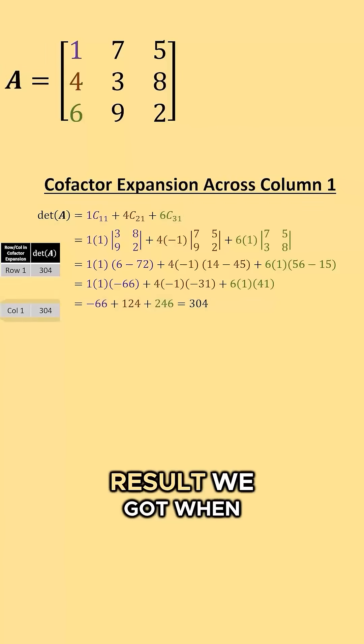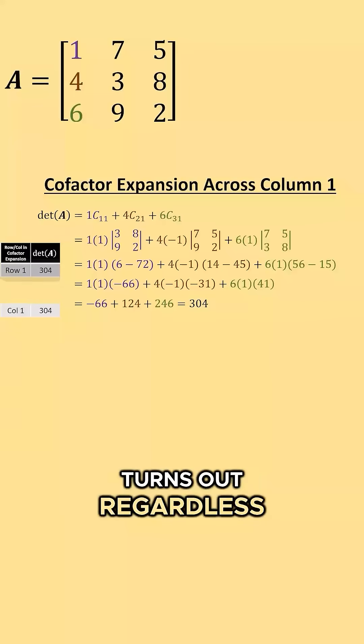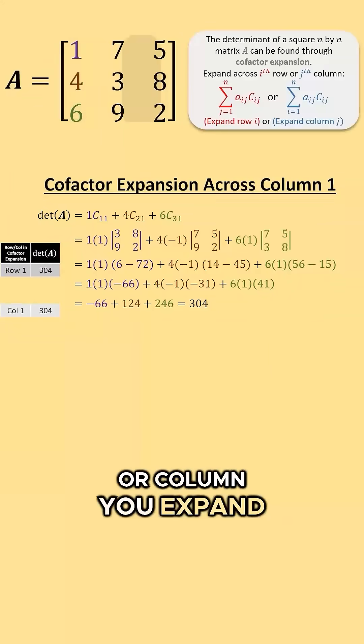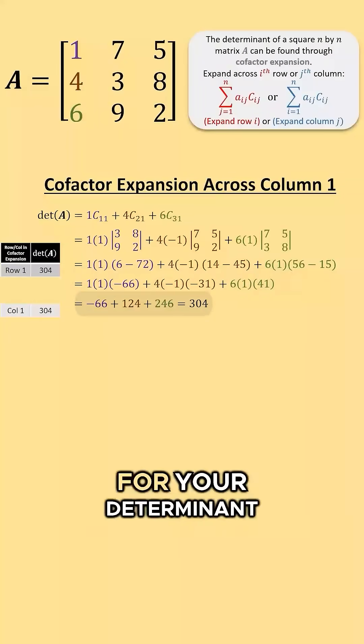This is the same result we got when we expanded across the first row. Turns out, regardless of the row or column you expand across, you will get the same value for your determinant.